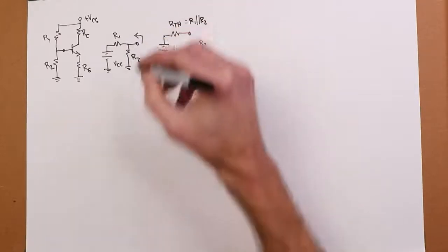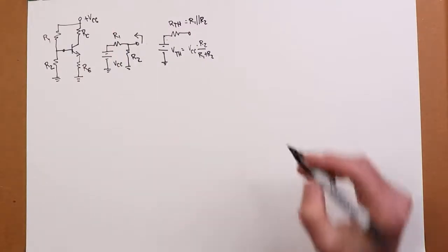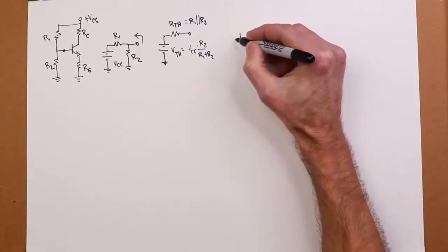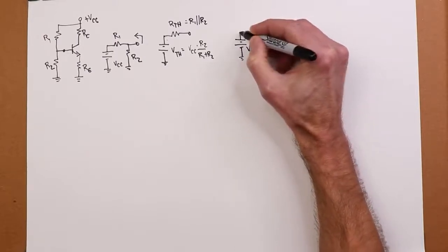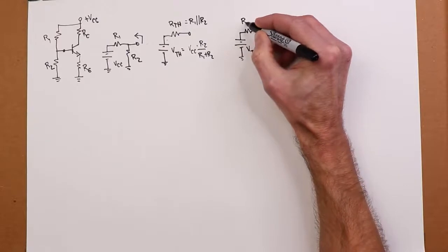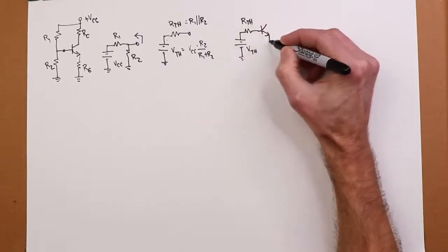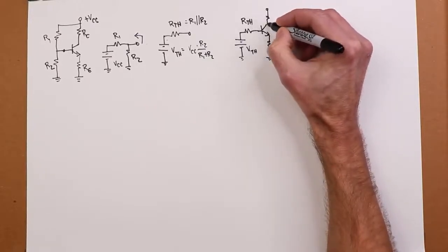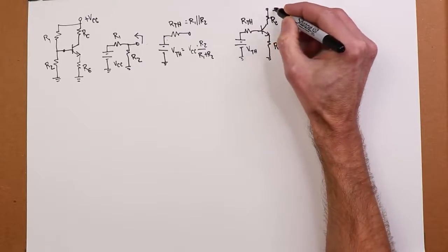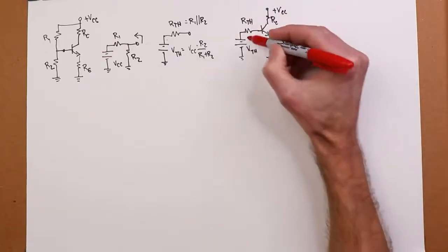Now we take this new circuit and we stick it back on to the original. So here's your V-thevenin, the R-thevenin, and here is the base of the transistor. Now this, we can do a little analysis on, because we can isolate this base emitter loop.